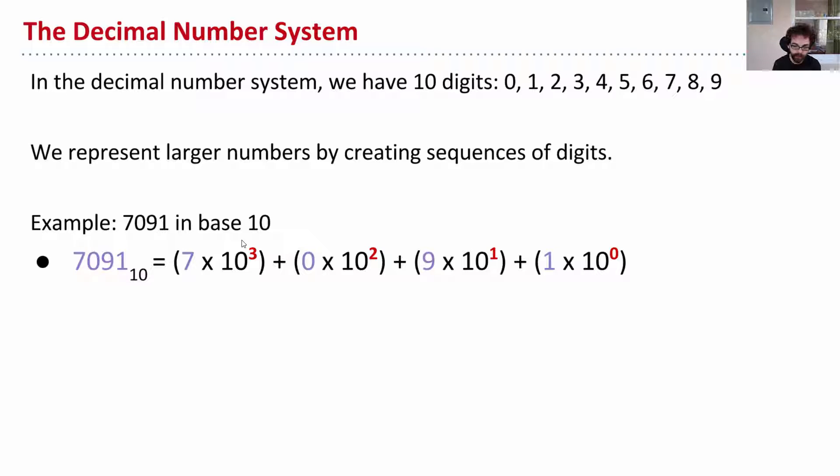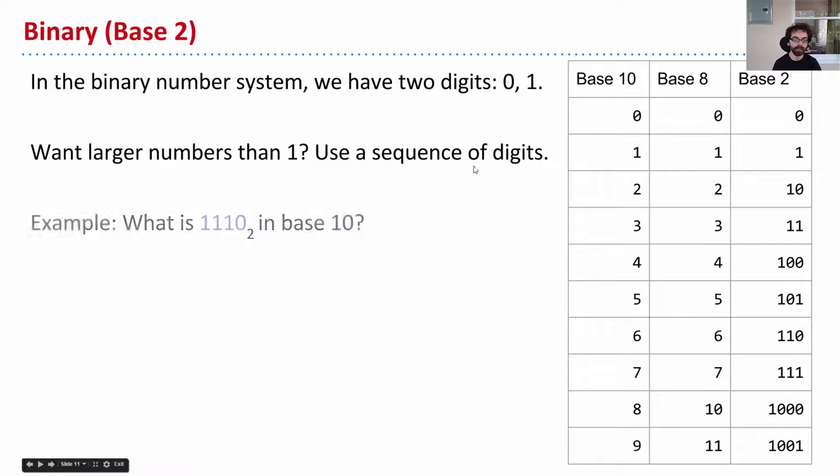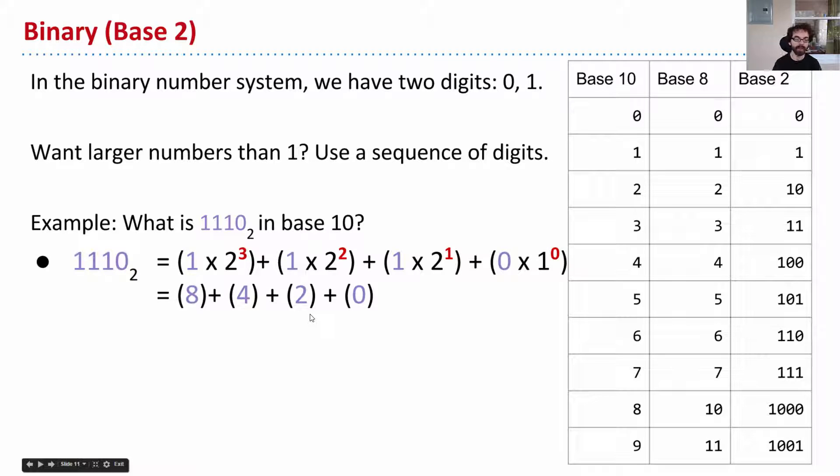And I bring this up because we're going to do something very similar in binary. So in binary, by contrast, instead of having 10 digits, we only have 2. We have 0 and 1. And just like in decimal, if I want to represent something larger than 1, then I need sequences of digits. So for example, the number 1, 1, 1, 0, and this right here means base 2. This is a binary number. If I want to convert this to base 10, to our familiar numbers, I want to understand what this binary number represents.